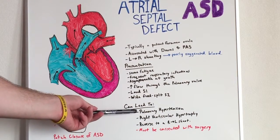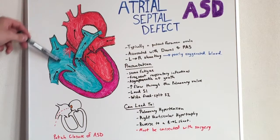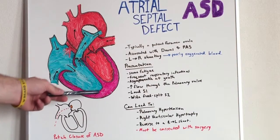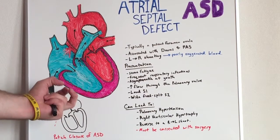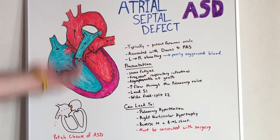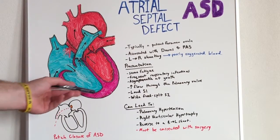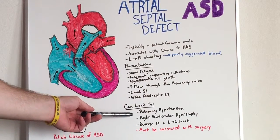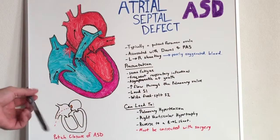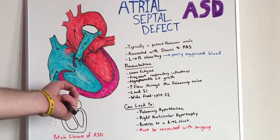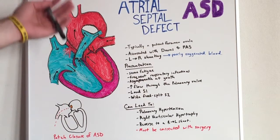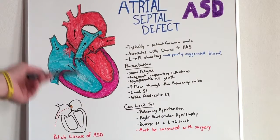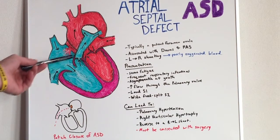If an atrial septal defect continues throughout life, it can lead to pulmonary hypertension. The added amount of blood shunted from left to right puts more stress on the right ventricle, which has to work harder to pump this excess blood. Over time, the right ventricular muscles will hypertrophy — becoming thicker and denser — to compensate for the increased pressure.